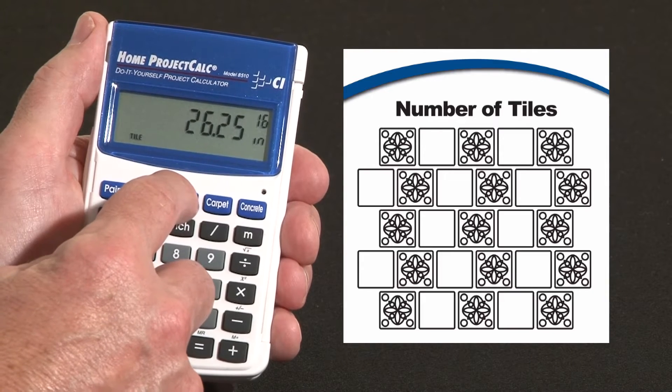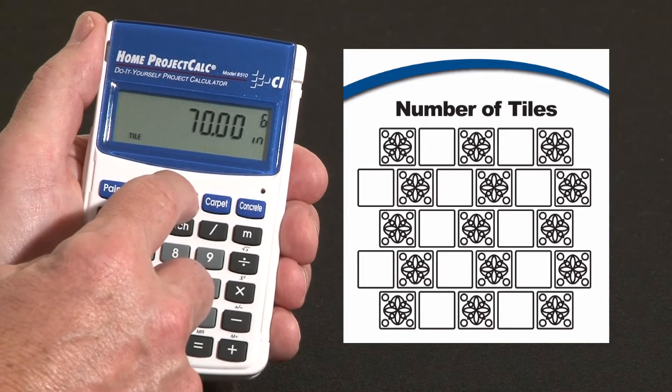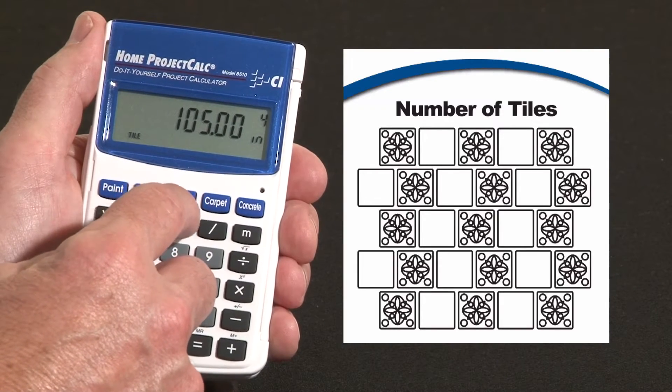On down the list, 16 inch tiles, 13 inch tiles, 12 inch tiles, all the way down to 1 inch tiles. It will give us the number of tiles we need for that strip.